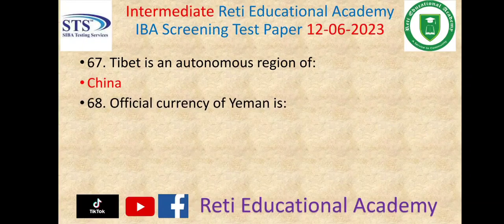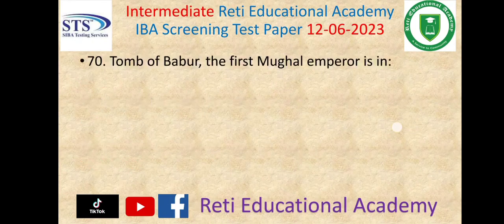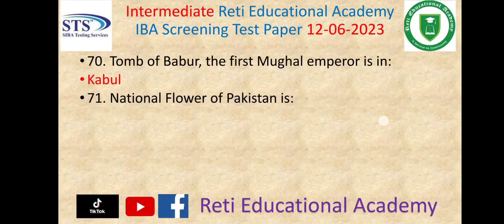Question number 68: The official currency of Yemen is Rial. Question number 69: Plus 92 is the country code of Pakistan. Question number 70: The tomb of Babur, the first Mughal emperor, is in Kabul.